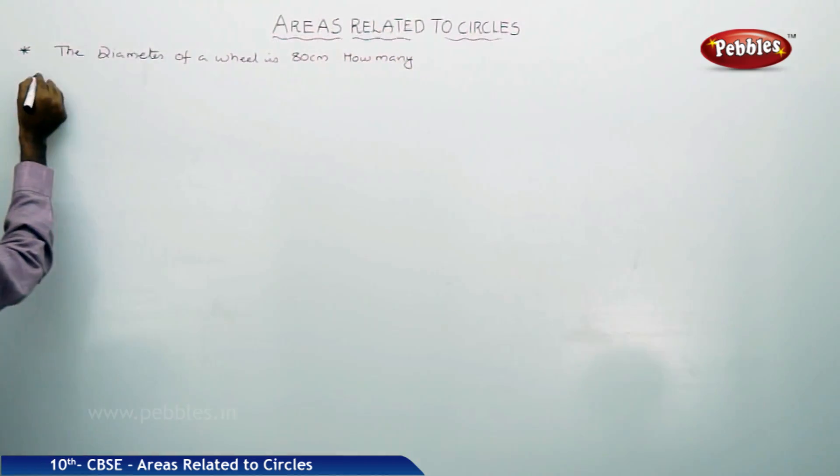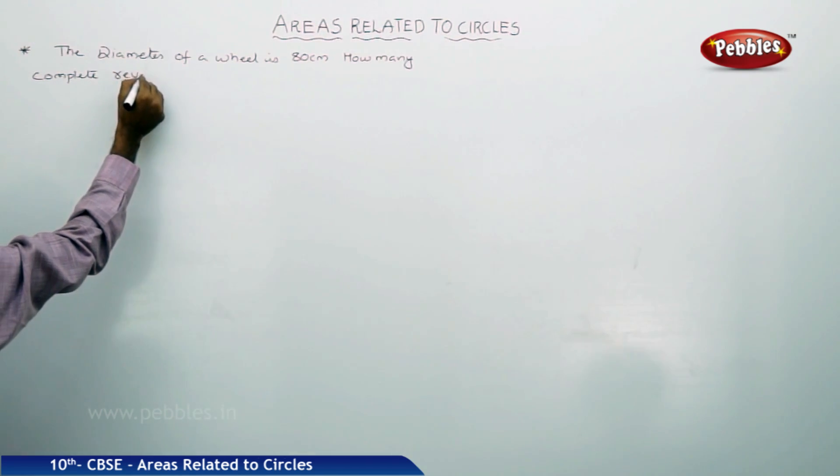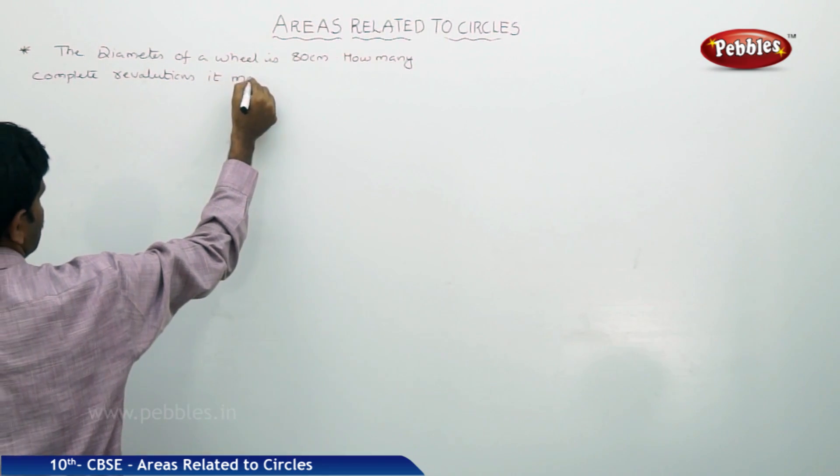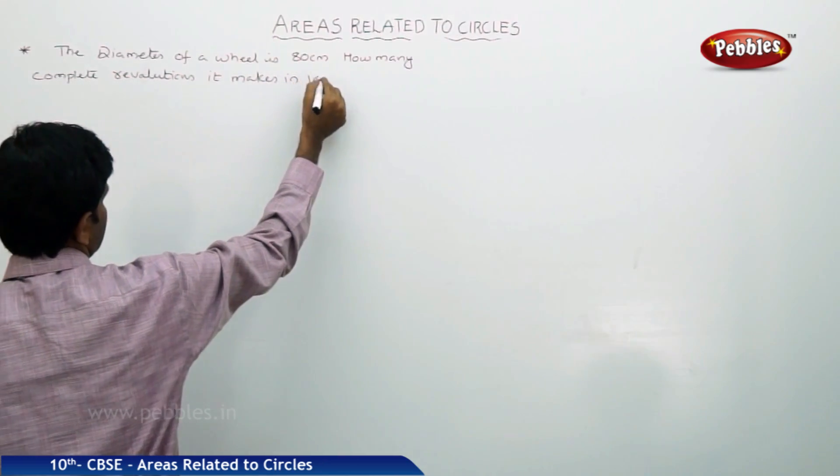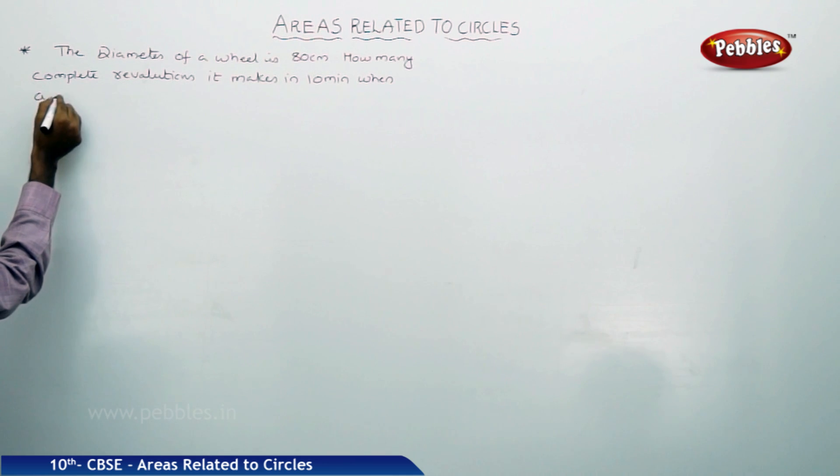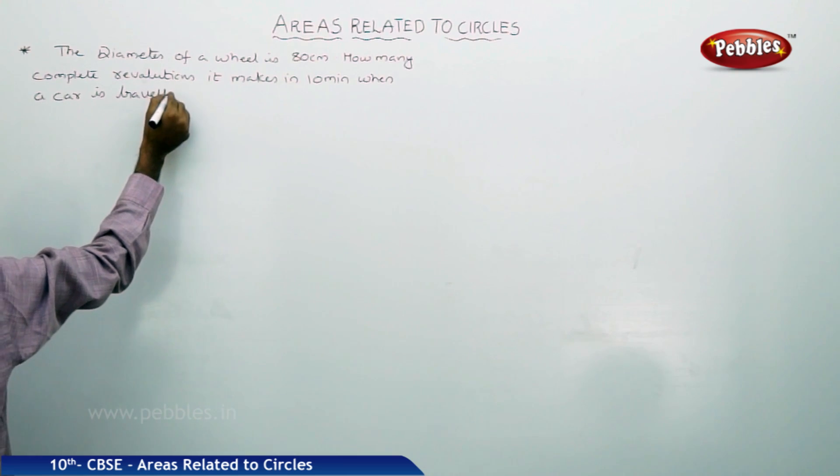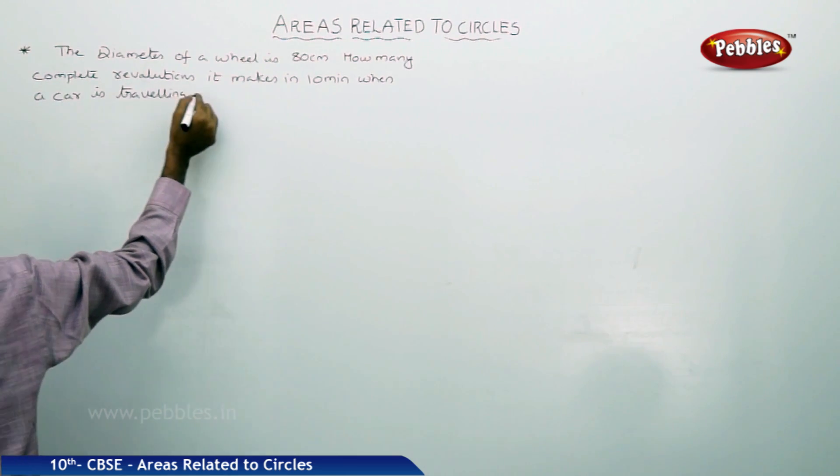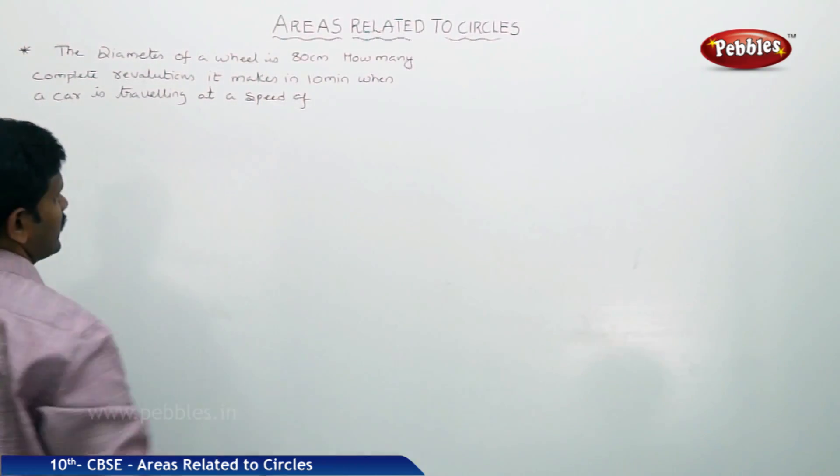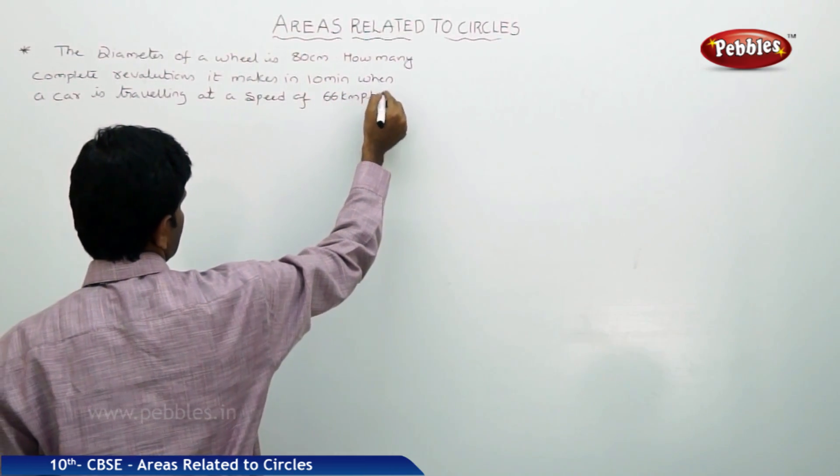How many complete revolutions it makes in 10 minutes when a car is traveling at a speed of 66 kilometers per hour?